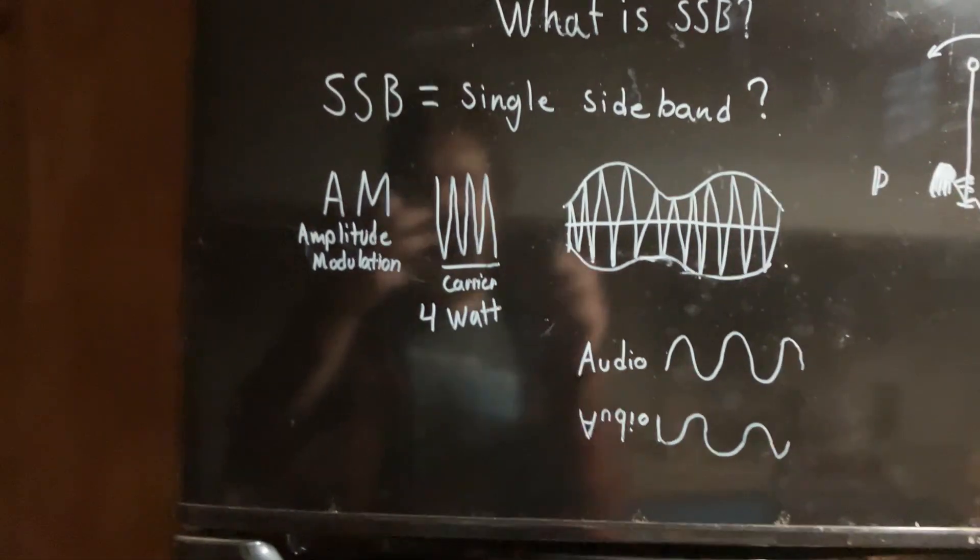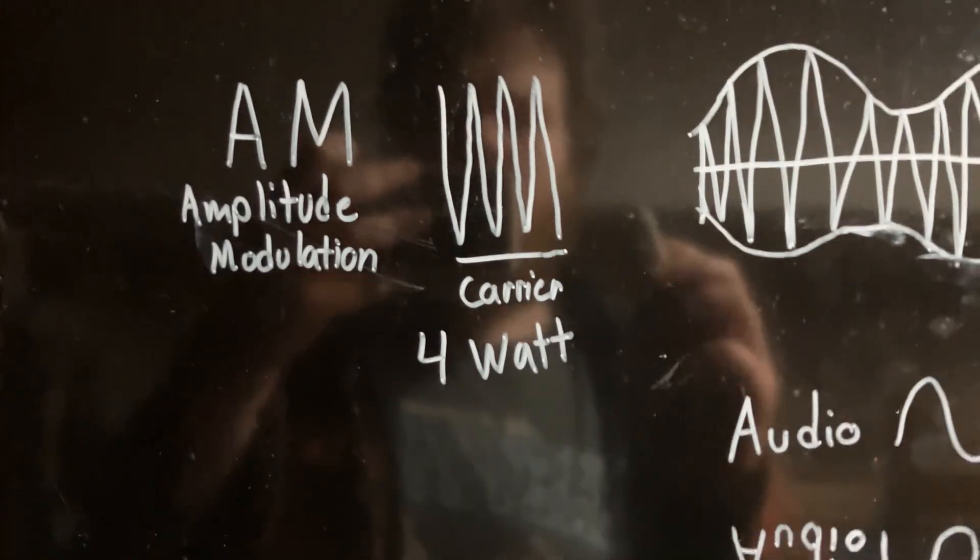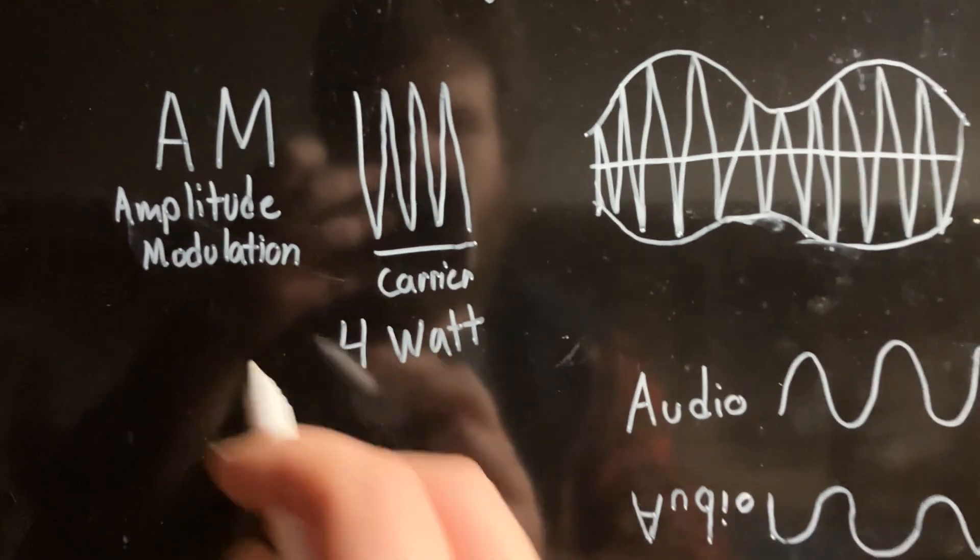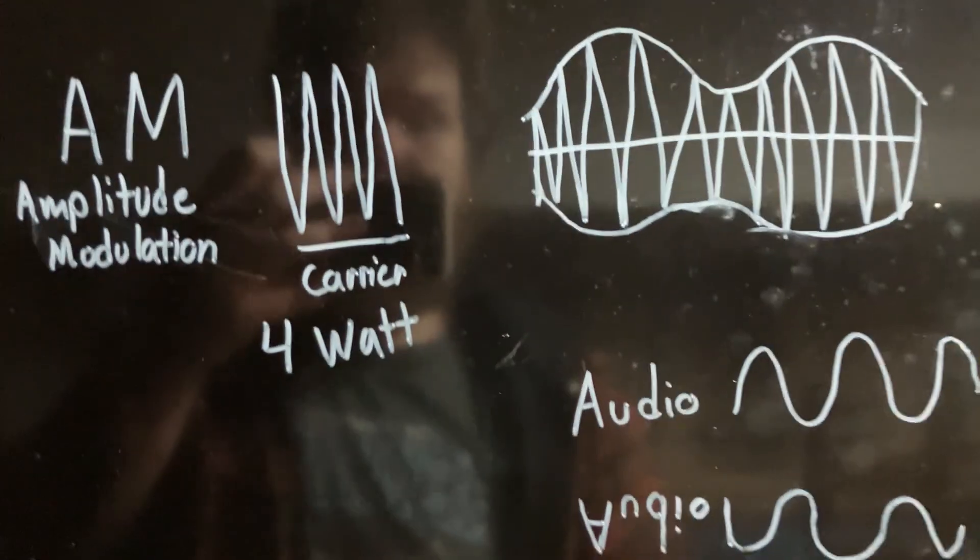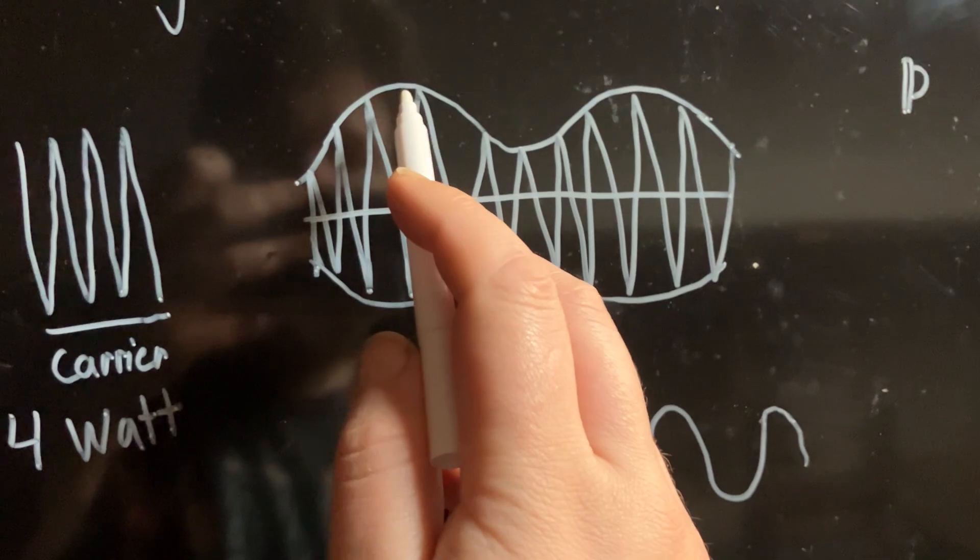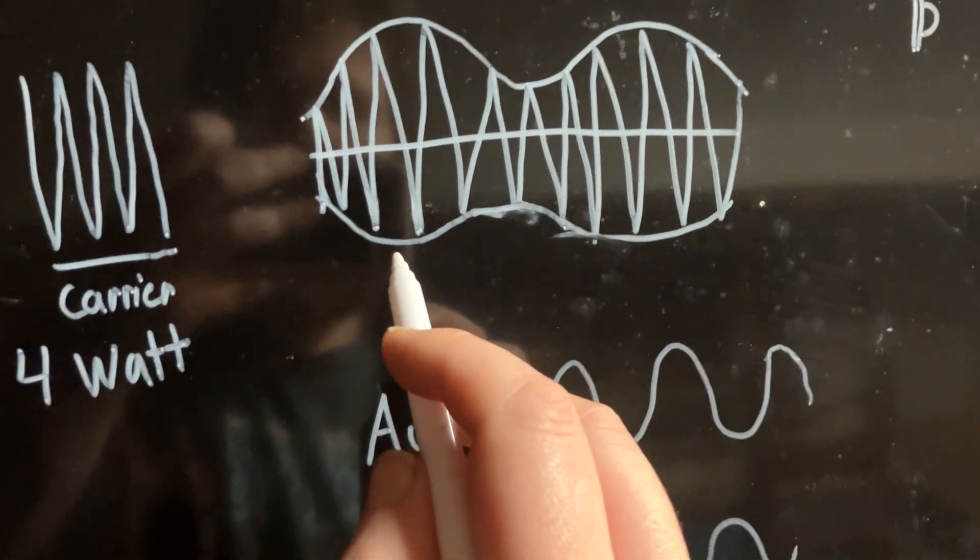On any standard 40 channel radio we have AM modulation, amplitude modulation. That takes a four watt carrier, which is a frequency itself, and impresses our audio upon that signal. You can see here when something peaks here, something peaks here—our audio is actually reflected.